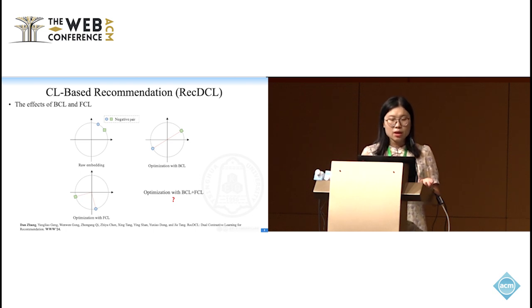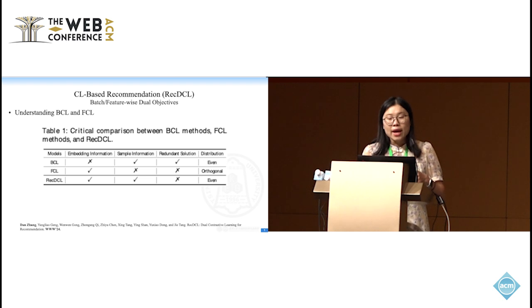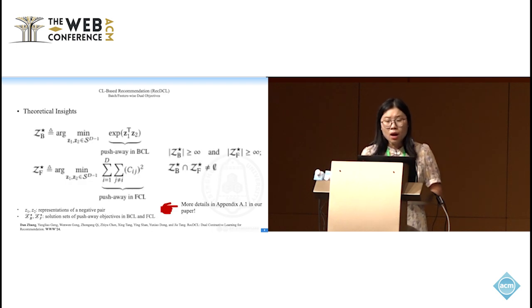We can see that for BCL plus FCL, the distribution still be uniform. If you are very interested, you can see the details in our paper. To better understand the difference between BCL and FCL, we provide some key comparisons between BCL, FCL, and RECDCL from four perspectives, including the embedding information, sample information, redundant solution, and the final distribution.